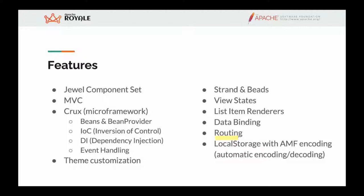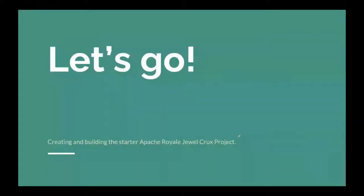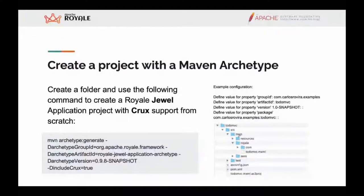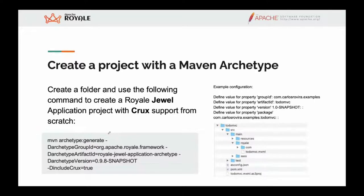There are six steps to cover. The first is creating the starter Apache Royale project, which we can do with Maven. I'll use Maven throughout this presentation because it's a powerful way to build projects. Royale also has other build systems like Ant, or you can use the SDK with your IDE, but I'll focus on Maven.